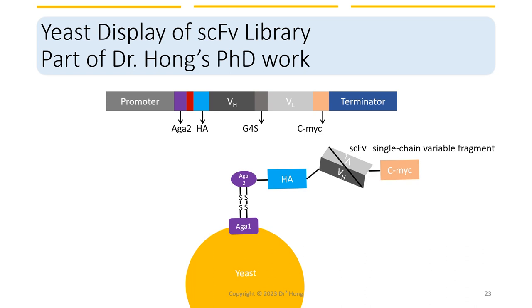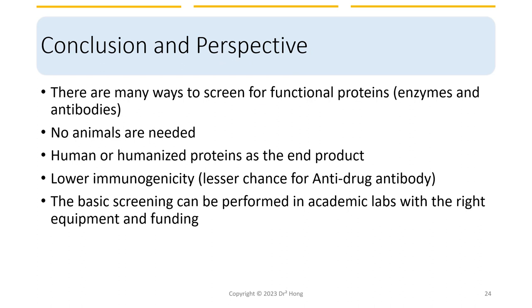In conclusion, there are many ways to screen for functional proteins such as enzymes and antibodies without the need to use animals. These screening techniques can generate human or humanized proteins as the end product with low to no immunogenicity for generating anti-drug antibodies. The basic screening project is fairly straightforward and can be performed in academic labs with the right equipment and funding.